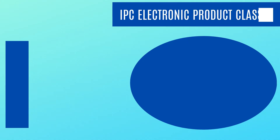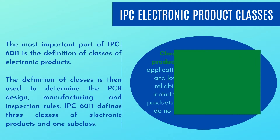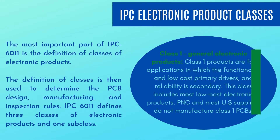IPC Electronic Product Classes: The most important part of IPC-6011 is the definition of classes of electronic products. The definition of classes is then used to determine the PCB design, manufacturing, and inspection rules. IPC-6011 defines three classes of electronic products and one subclass.